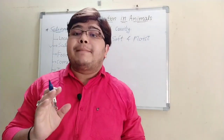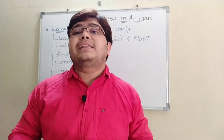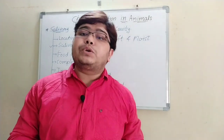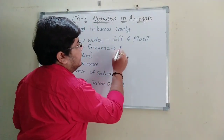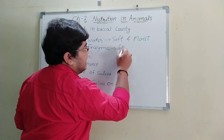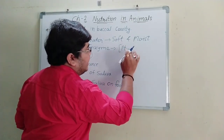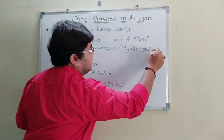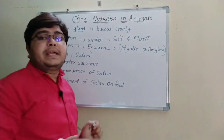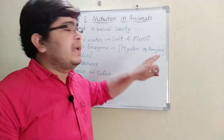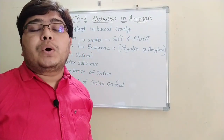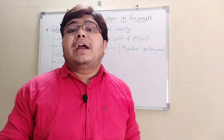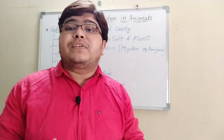An enzyme is a chemical that reacts with our food and makes it easier to digest. The enzyme in saliva is known as amylase or ptyalin (P-T-Y-A-L-I-N). Both ptyalin and amylase are enzymes that work with saliva to make food soft and react with the food.